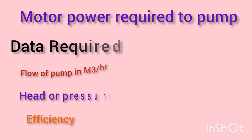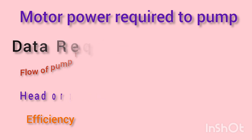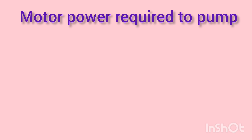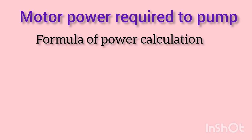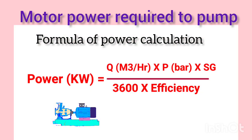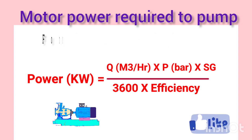Now, on to the formula to calculate pump power in kilowatts. The formula is: Power (kW) = Flow Rate × Pressure (bar) × Specific Gravity / (3600 × Efficiency).